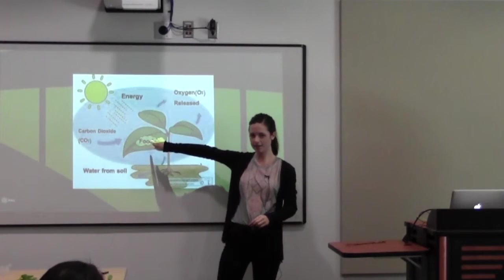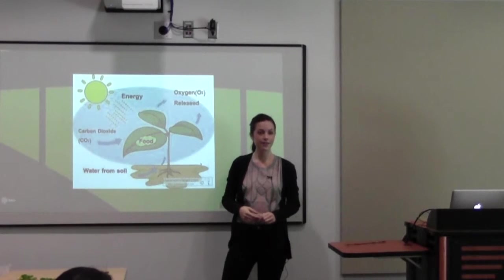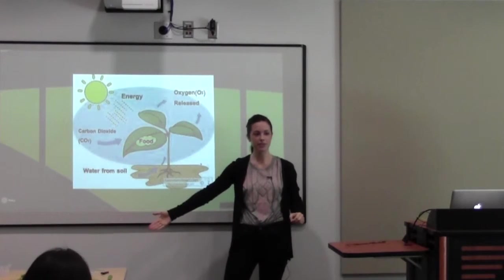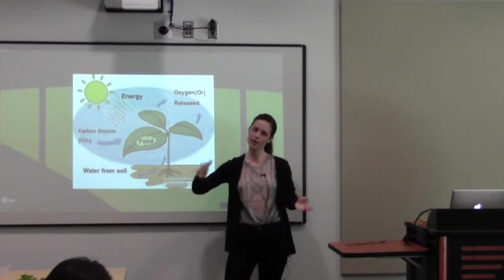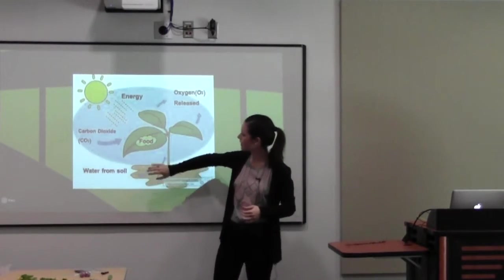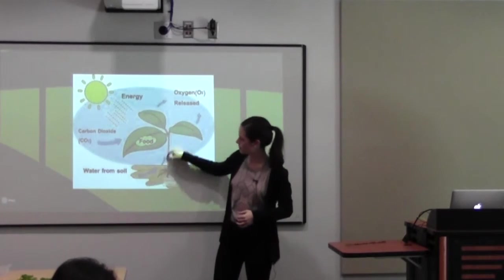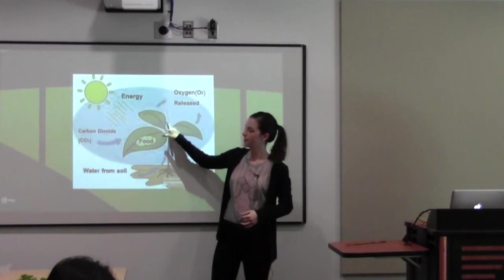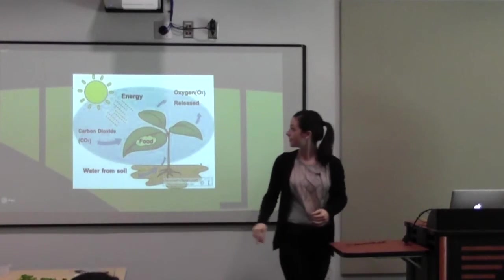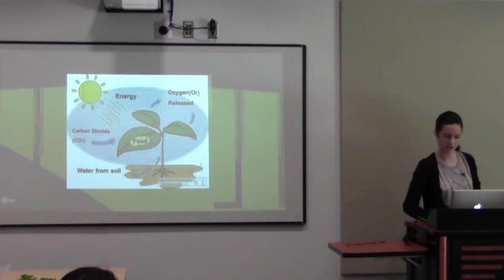The energy from the sun comes down and the plant is going to take up carbon dioxide. It's the air that we breathe out. We have a really good relationship with plants where we breathe out carbon dioxide and they breathe out oxygen and we trade back and forth. With the help of the water from the soil, the carbon dioxide from the air, and the energy from the sun, the plants can start making their own food. And then in turn, they release that oxygen.